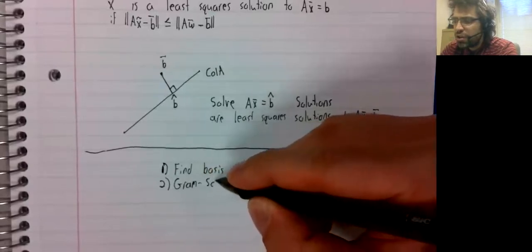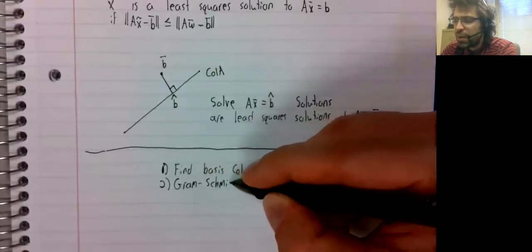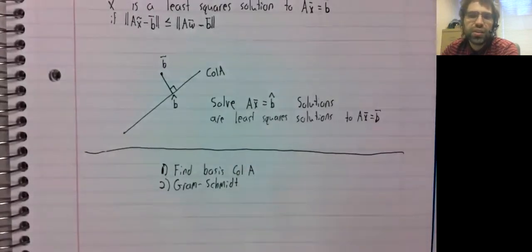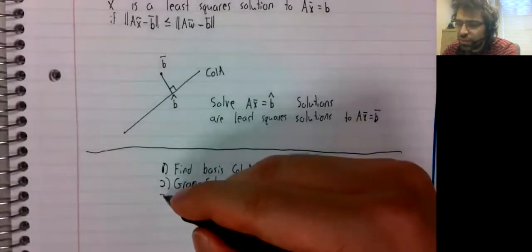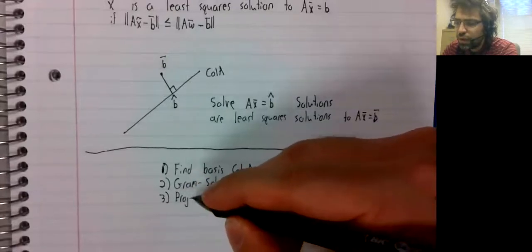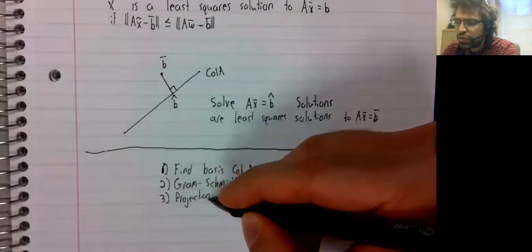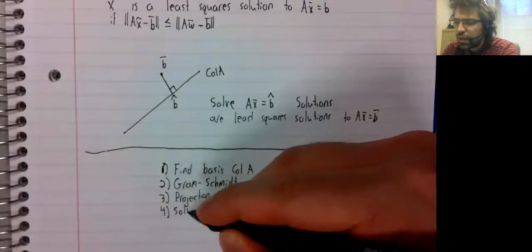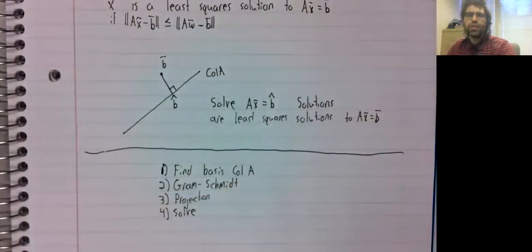we don't merely need a basis. We need an orthogonal basis. We'd have to perform the Gram-Schmidt process. Then we'd do the projection and finally solve.